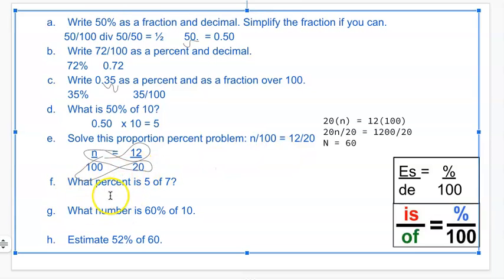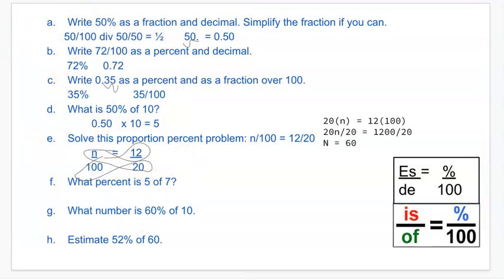Now we're on to these types of problems. What percent is 5 of 7? So we're going to use this over here: is over of equals percent over 100. So is 5 goes on top of the fraction, so it's going to be 5. Of 7 will go on the bottom. And then we're going to set up equals. What percent? So we don't know the percent, so I'm going to use N and then it's over 100.